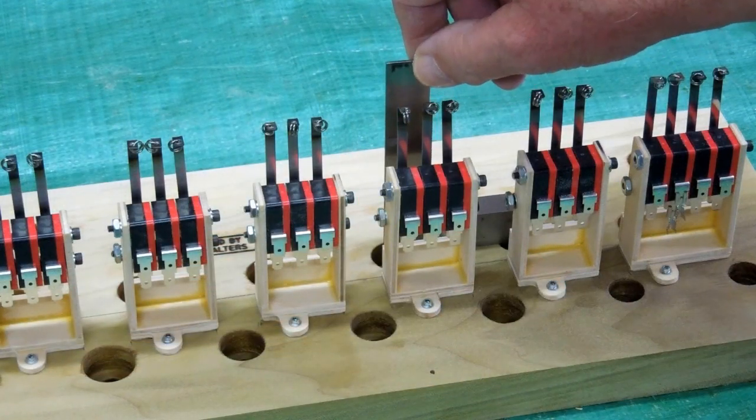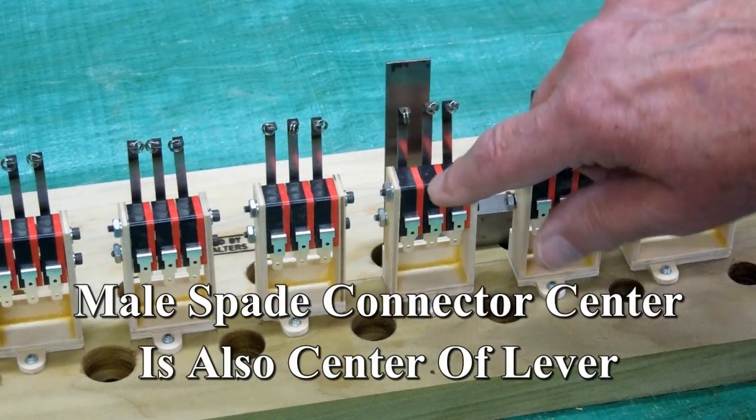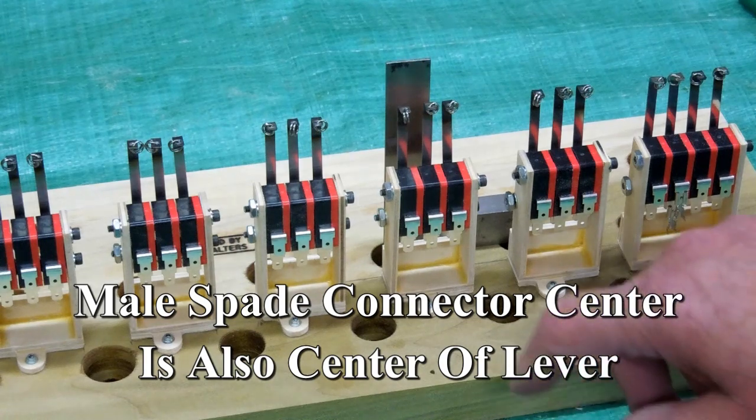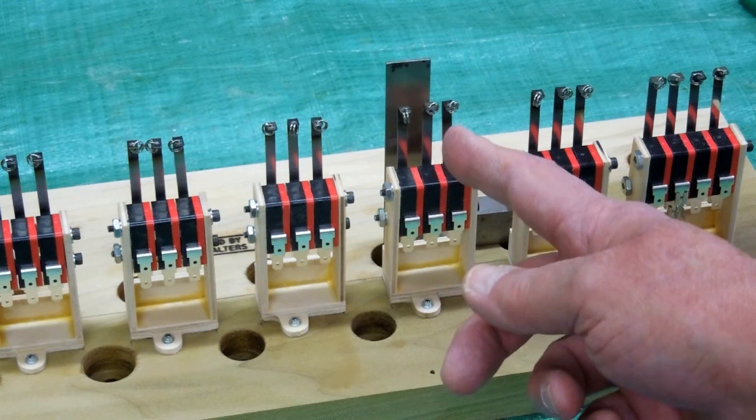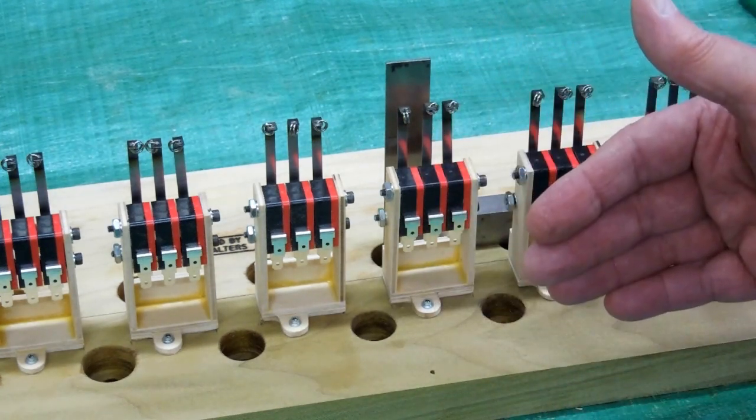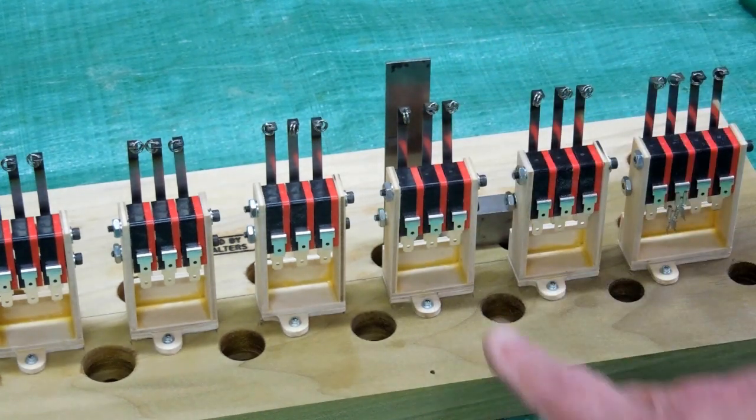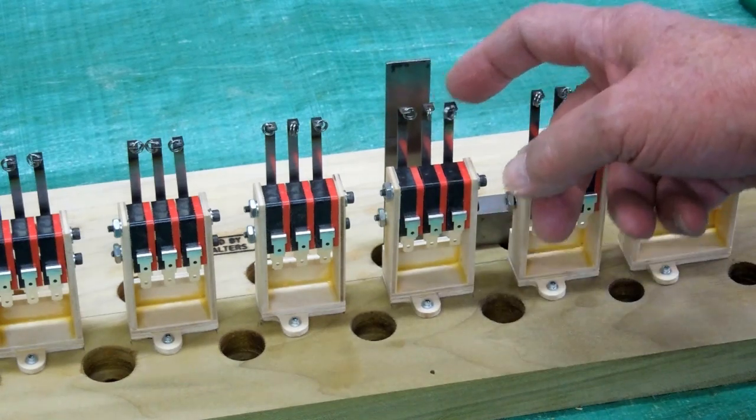Now, I need to take a square and mark where the center of each of these levers are for the micro switches. I need to extend that forward so I can come up here and drill a hole in this front facing piece of wood. That'll be for the pull cords for each of these switches.